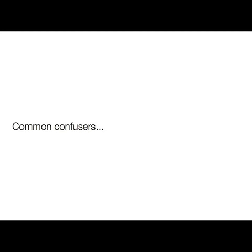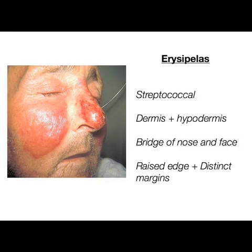I want to talk about two very common confusers — things people get confused about when talking about cellulitis and staphylococcal and streptococcal skin infections. The first is erysipelas, which is caused by streptococcal infection. Rather than affecting the dermis and subcutaneous tissues, it affects the dermis and the hypodermis. Typically it starts on the bridge of the nose and the face, and is particularly common in the elderly. Notice the redness is raised on the face — cellulitis doesn't have a raised edge, but erysipelas does. There is also a distinct margin, which is what importantly distinguishes erysipelas from cellulitis — a very distinct margin between infected and non-infected skin.